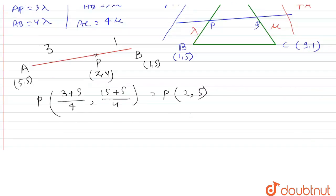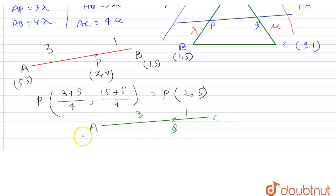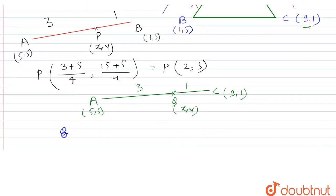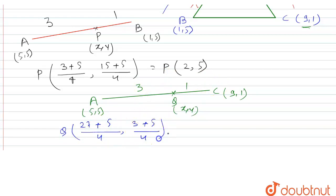Similarly, we can find the coordinate of Q. We draw line segment AC where A is (5,5) and C is (9,1), with ratio AQ:QC = 3:1. By using the section formula: X = (3×9 + 1×5) / 4 = (27+5)/4 = 32/4 = 8, and Y = (3×1 + 1×5) / 4 = (3+5)/4 = 8/4 = 2. So the coordinate of Q comes out to be (8, 2).